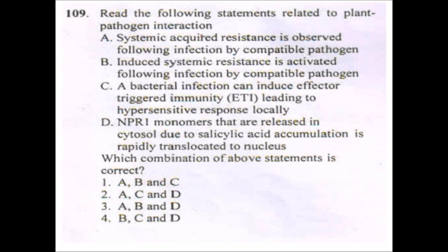Next question on plant-pathogen interaction: systemic acquired resistance (SAR) is observed following infection by a compatible pathogen — true. Induced systemic resistance is activated following infection by compatible pathogens — this is incorrect (induced systemic resistance is activated by non-pathogenic rhizobacteria, not compatible pathogens). The correct statements are A, C, and D, and the incorrect one aligns with the answer.